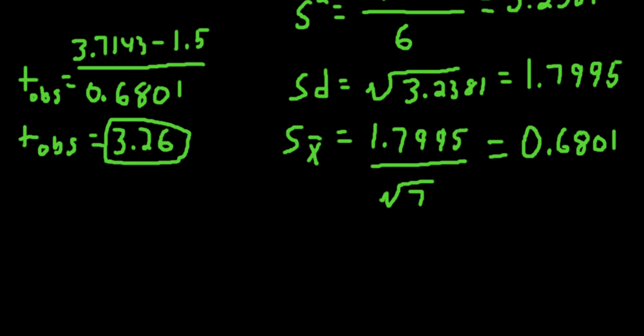As the last step, we'll compute an effect size, Cohen's D value for this analysis. So to compute Cohen's D, we simply take the difference in the numerator here, which is our sample mean minus our population mean, which was 2.2143, and divide it by the sample standard deviation, which was 1.7995, to get a Cohen's D value of 1.23, a rather large Cohen's D value, but these are made-up data, so that's not surprising.